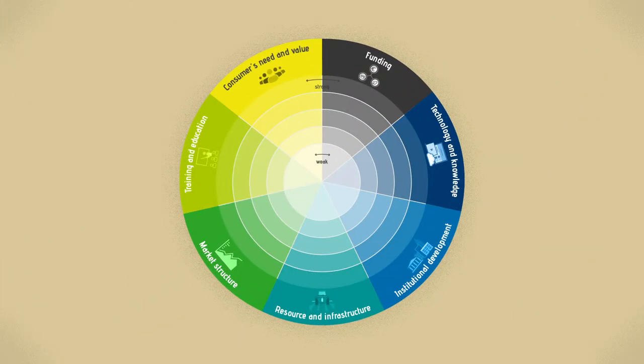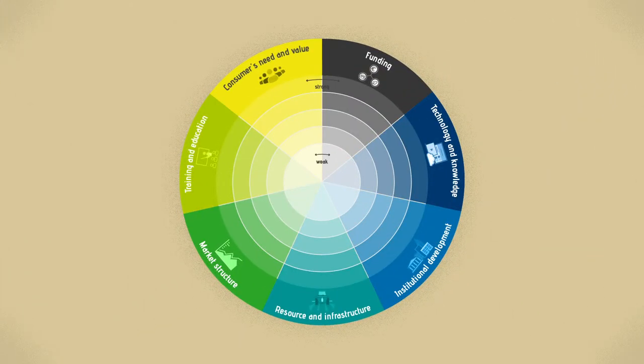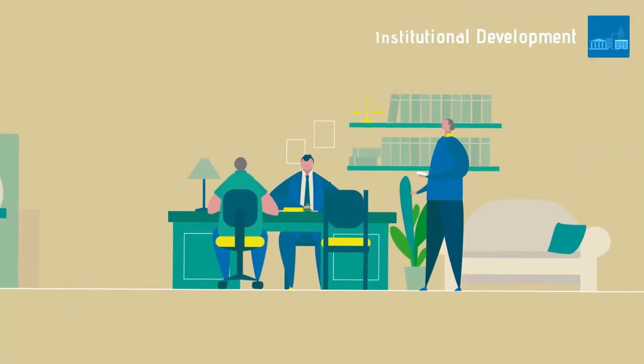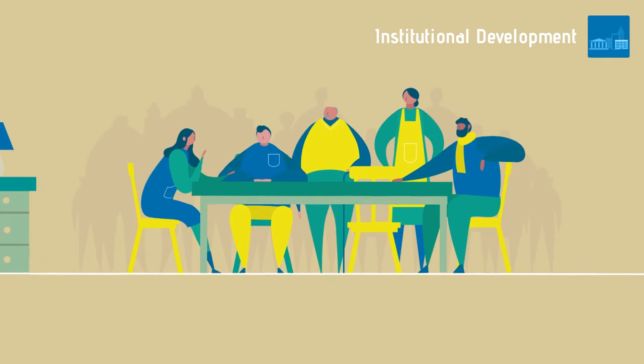The business environment consists of seven sub-arenas. Institutional development determines the rules, regulations, and policies each entrepreneur has to follow.